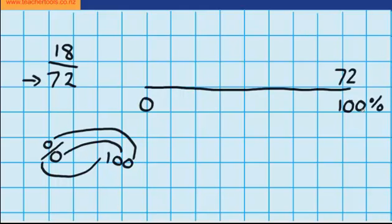So since I know 72 would be 100%, I should be able to work out what 50% would be. It's going to be half of 72, and I know that half of 72 is 36.